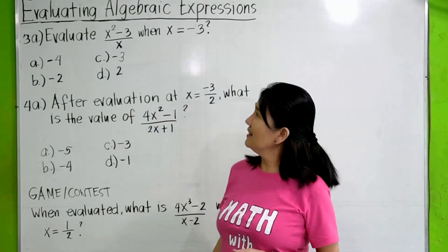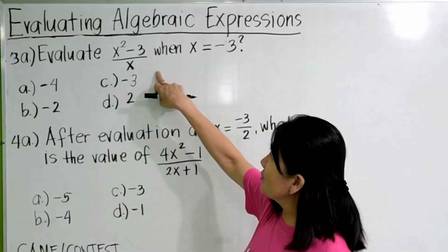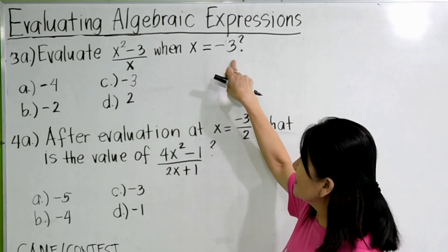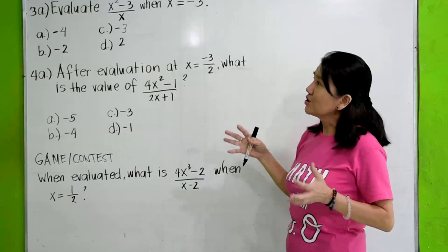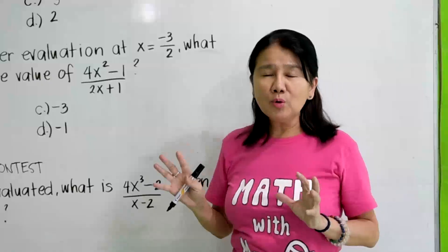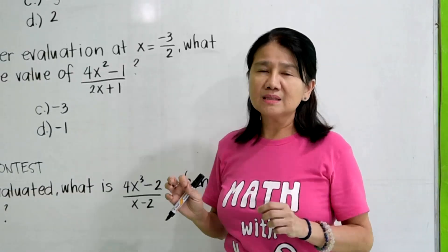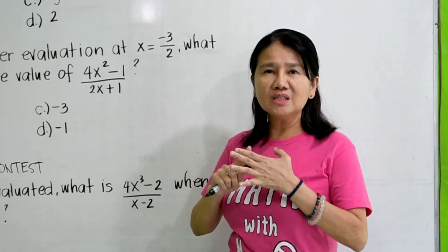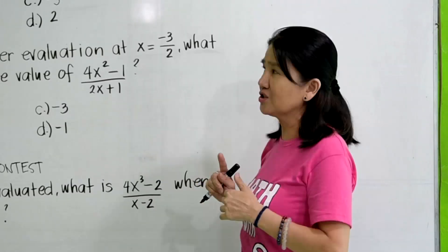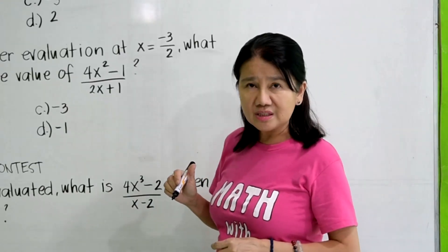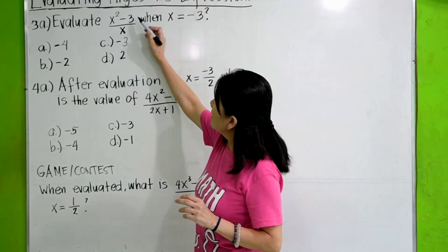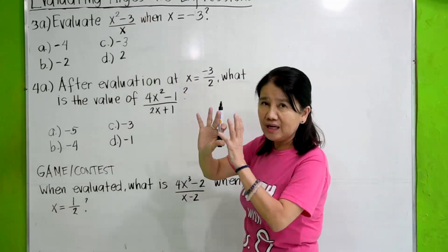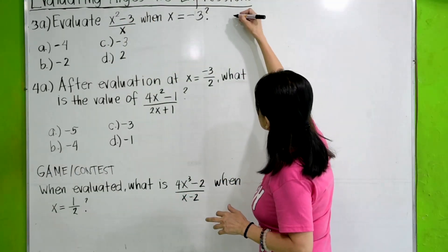Okay, let's proceed to number 3A. Evaluate x squared minus 3 all over x when x is equal to negative 3. So again, we've always followed the PEMDAS. Parentheses, exponents, multiplication, division, addition, subtraction, from left to right, whichever comes first.